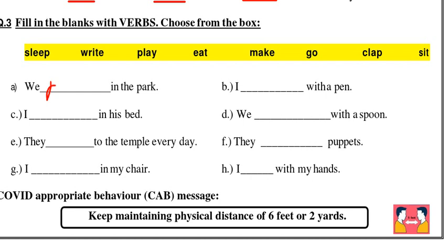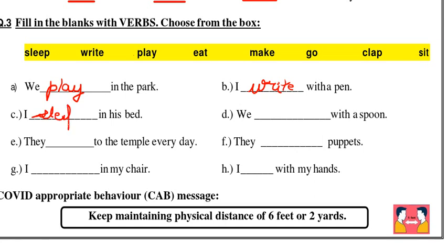Second: 'I dash with a pen.' You write with a pen, so the answer is 'write.' 'I dash in his bed' — what do we do on the bed? We sleep. So: 'I sleep in his bed.'